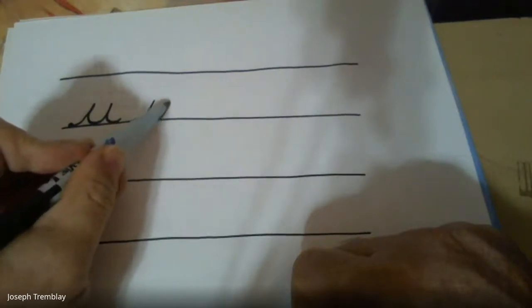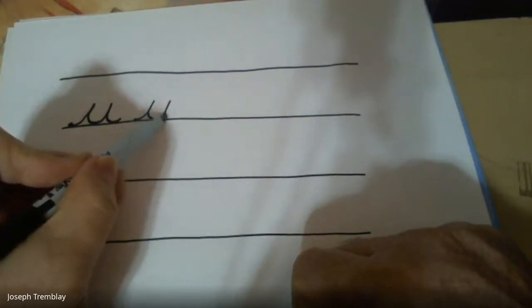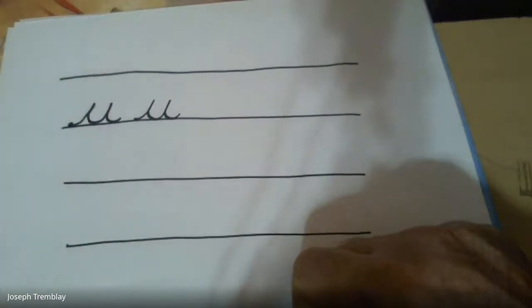So again I start on the ground. I go upstairs, downstairs, back upstairs, back downstairs, and out. The letter U.